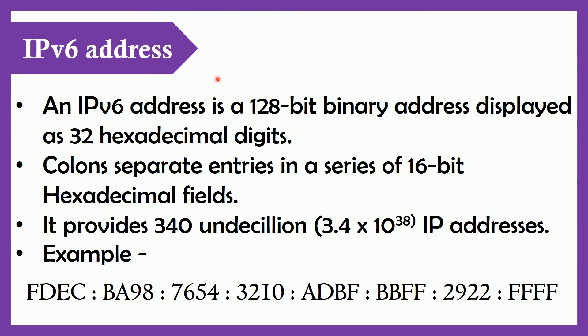IPv6 address is the next generation of IP addresses and it is a powerful enhancement to IPv4. An IPv6 address is a 128-bit binary value which can be displayed as 32 hexadecimal digits. The hexadecimal digits A, B, C, D, E, F are not case sensitive. Each 16-bit hexadecimal field in the series of entries is separated by a colon. It provides 2 raised to the power 128 IP addresses, i.e., 340 undecillion IP addresses. The crucial difference between IPv4 and IPv6 is the address space — the IP addresses generated by IPv6 are 2 raised to 96 times more than IPv4.